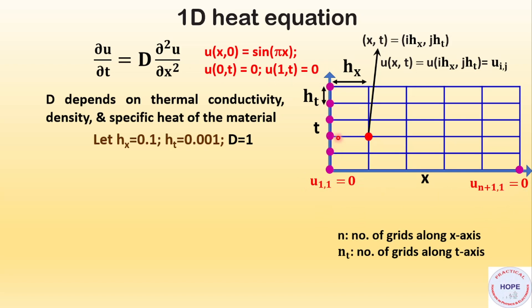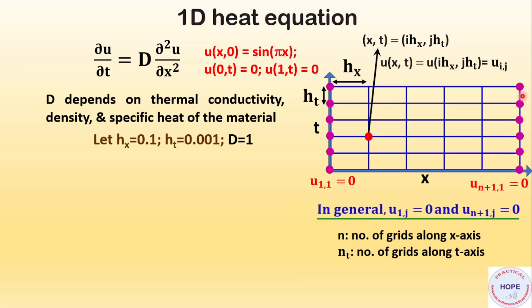Considering the points on the left and right boundaries, we know the value of u at all these points, which is 0. Hence in general we can write u(1, j) equals 0 and u(N+1, j) equals 0 for all time steps j.